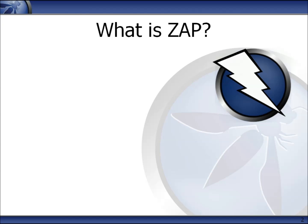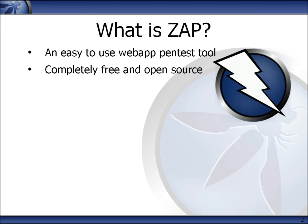I'll start with an obvious question: What is ZAP? ZAP is an easy-to-use tool for finding vulnerabilities in web applications. It's important to note that you should only use ZAP on your own applications, or ones that you have permission to test. It's completely free and open source. It's also one of the select group of OWASP flagship projects, and is the tool OWASP recommends for testing web applications.